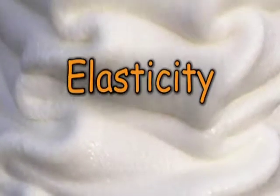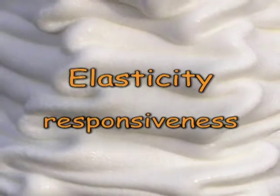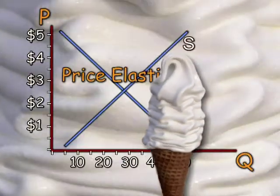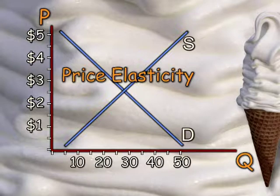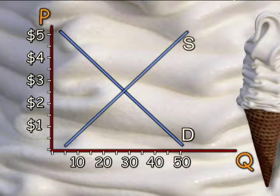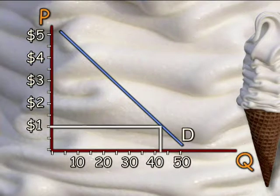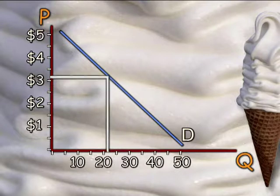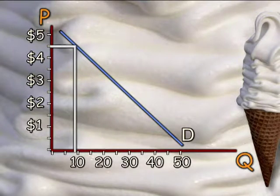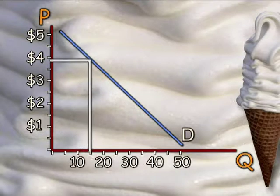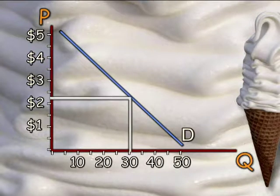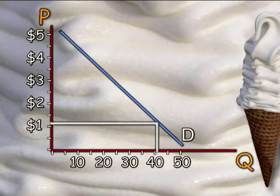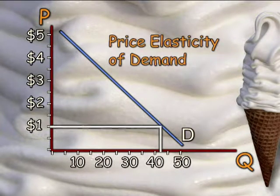Elasticity is a favorite term in economics, meaning responsiveness. It's why supply and demand schedules are usually sloped, because quantity supplied or demanded usually responds to changes in price. Take ice cream cones — the more they cost, the fewer people buy. As the price goes up, fewer ice cream cones are purchased; as the price goes down, the quantity demanded increases. How much consumers respond to price is known as the price elasticity of demand.